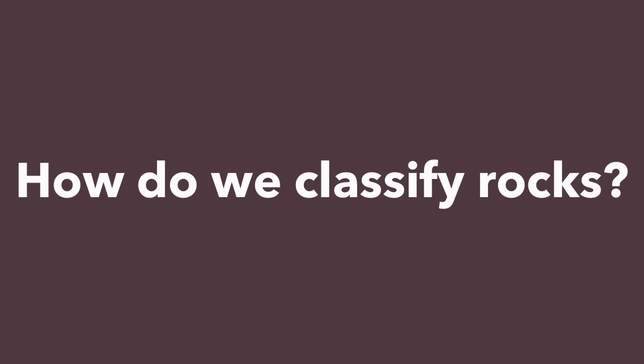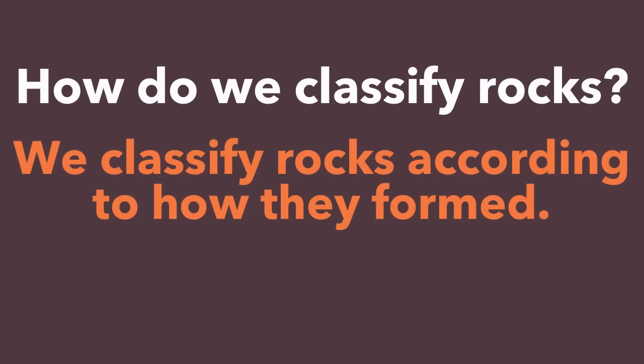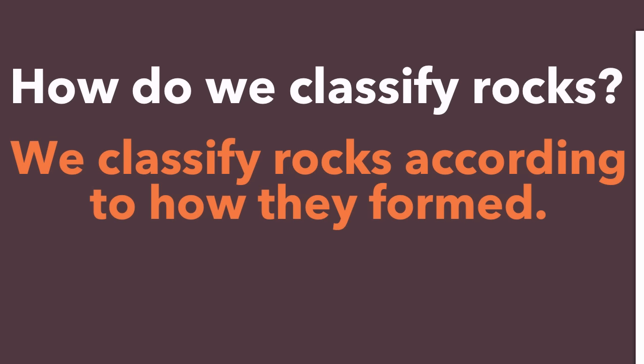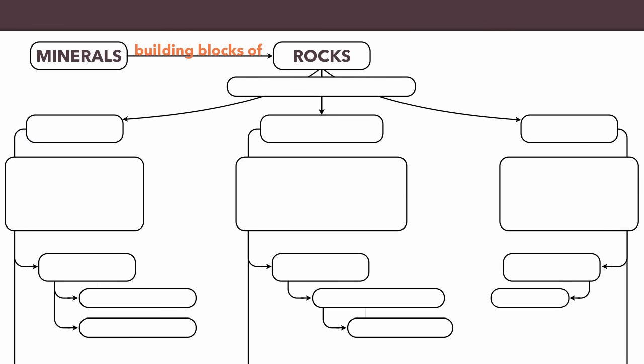Well, it turns out that the best way to classify rocks is based on how they form — the way in which they come to be. So let's add that to our sheet here. Under the word rocks, we're going to write that they're classified based on their method of formation, or simply how they form. And if you do this classification, you will have three categories.